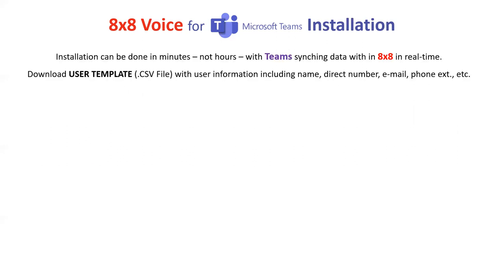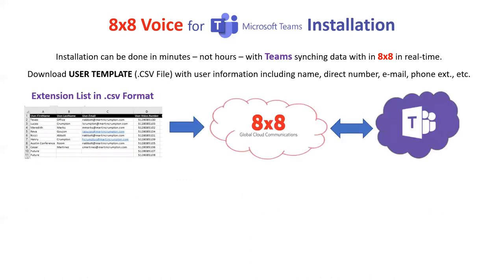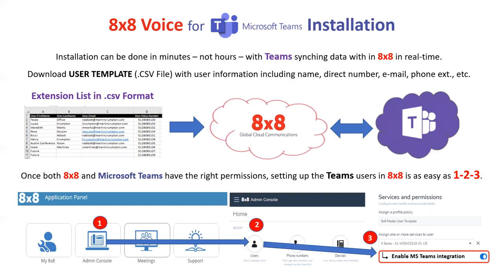Installation is pretty easy — I've done several of them. This installation can be done in minutes, not hours, because Teams just syncs up with 8x8. You download a user template in a CSV file format, put it into 8x8's cloud, which syncs with Teams via Active Directory. Once both 8x8 and Teams have the right permissions, setting up Teams users in 8x8 is as easy as one, two, three. You go into the application panel, find the user, enable Microsoft Teams integration, and you are done.